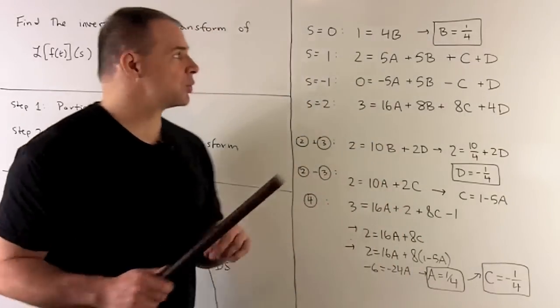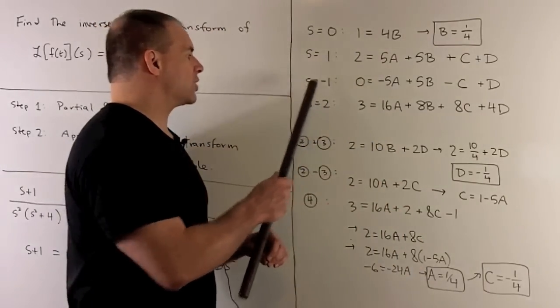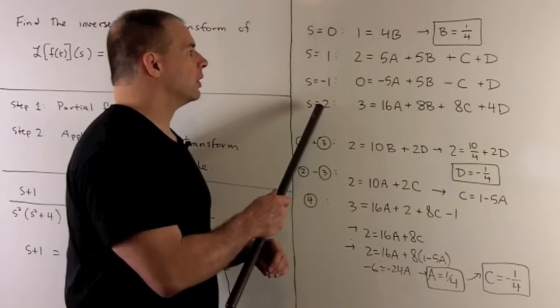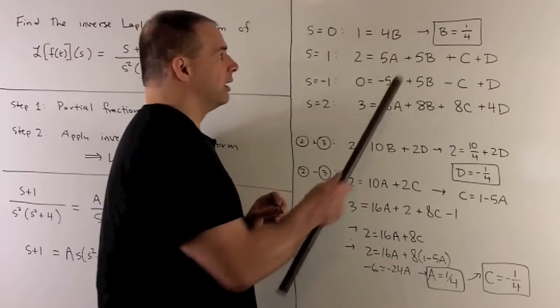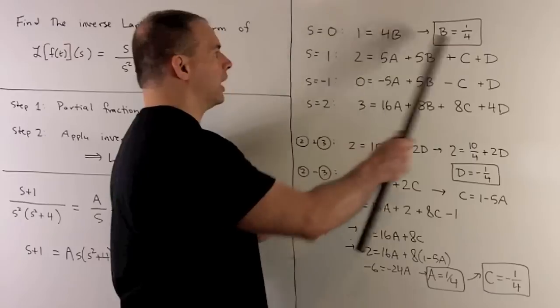Now, the points that I'll use, we'll use s equals one, minus one, and two. So, we're going to get four equations, four unknowns. Right off the bat, we'll hit B equal to one quarter from equation one.